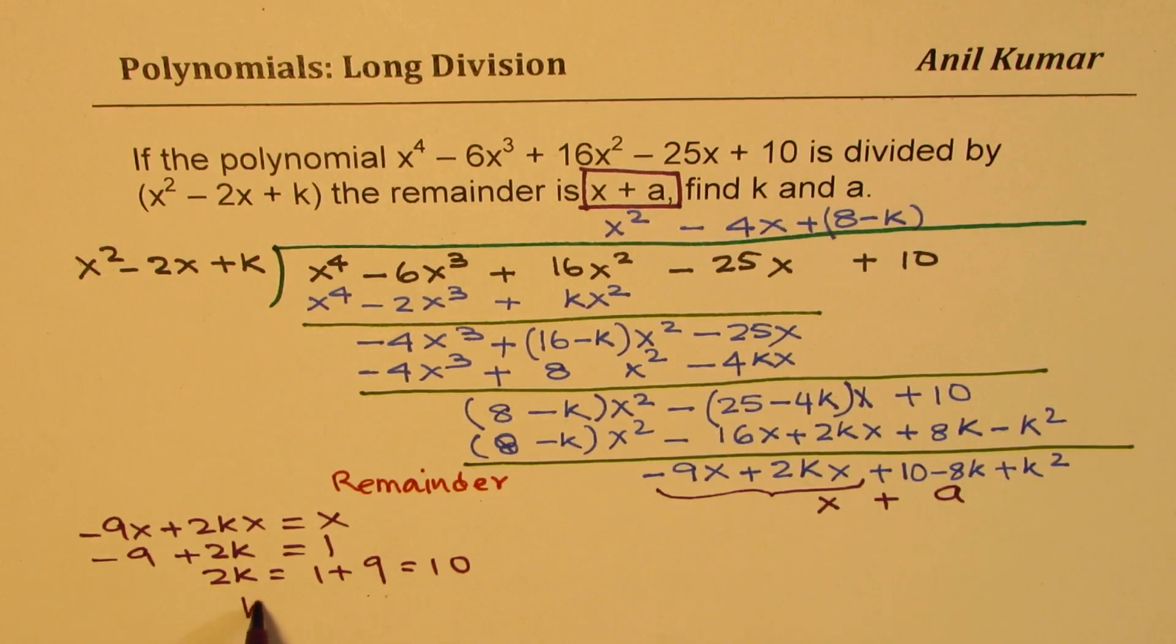So that gives you that 2k equals to 1 + 9, which is 10, or k is equal to 5. So that is how you solve for k. Is that clear?